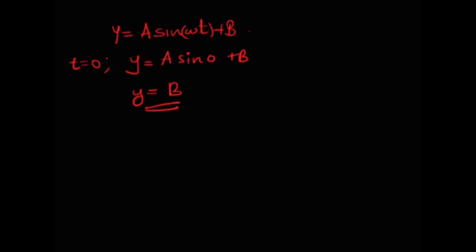Since the oscillation happens about B, the two extreme points are y = B + A and y = B − A. The constant B does not contribute to the amplitude. Therefore the amplitude of this oscillation is simply A.